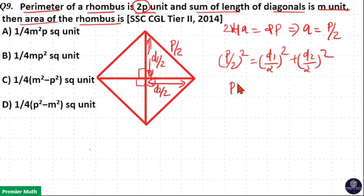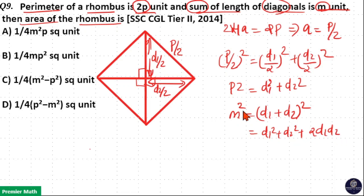Which means p square is equal to d1 square plus d2 square. Now here sum of length of diagonals is m unit, which means m is equal to d1 plus d2. Then m square is d1 plus d2 the whole square, which means d1 square plus d2 square plus 2d1d2 is m square.